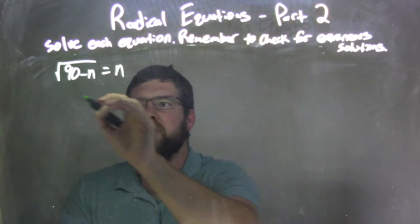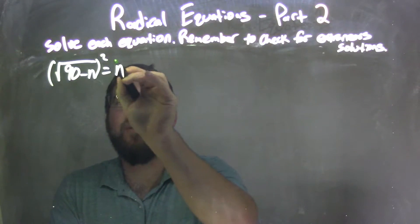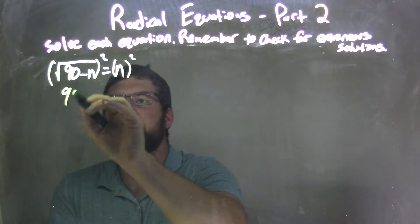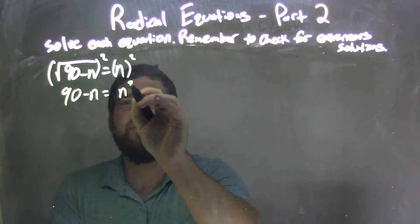First thing, I need to square both sides. Get rid of that square root. Square both sides here. So we have 90 minus n equals n squared.